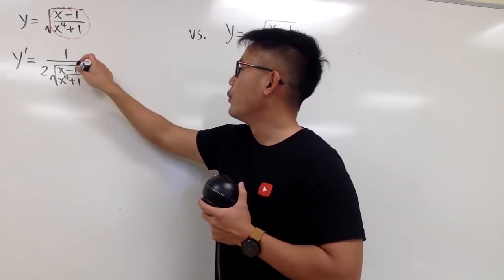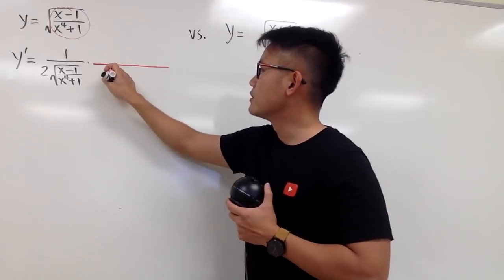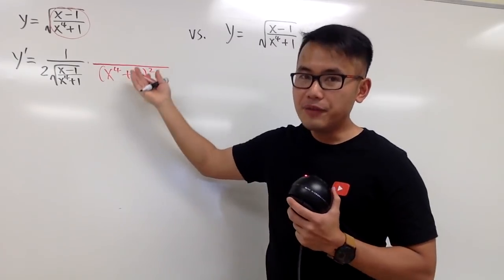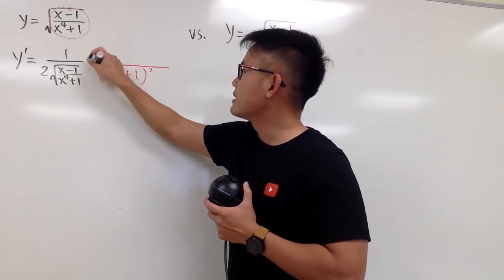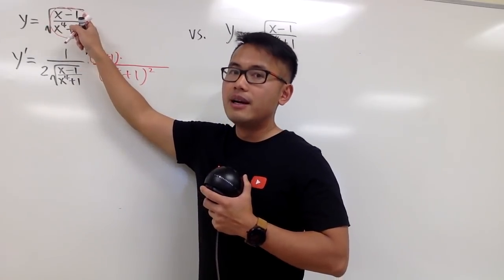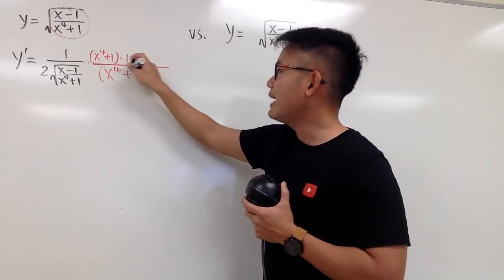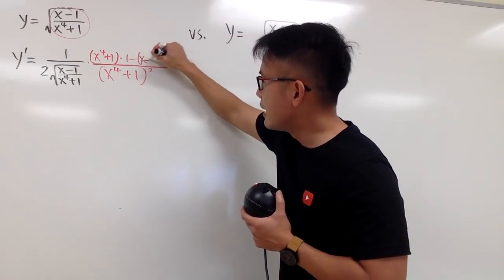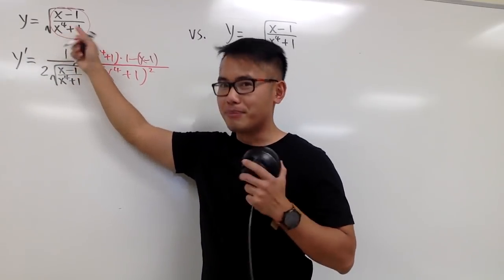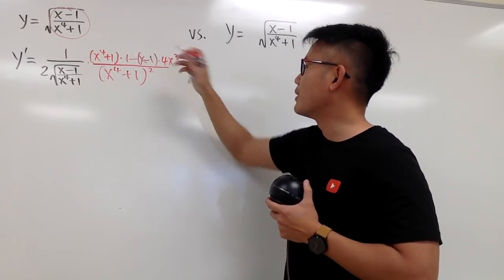The quotient rule says we are going to first square the denominator, so let me just do that first and put it on the bottom. So we will have x to the fourth power plus 1 squared. And then for the top, we keep the bottom, which is x to the fourth power plus 1, and we multiply by the derivative of the top. The derivative of x minus 1 is just 1. And then we minus, we keep the top, which is x minus 1, and then we multiply by the derivative of the bottom. The derivative of the bottom is just 4x to the third power, so let's multiply by 4x to the third power.